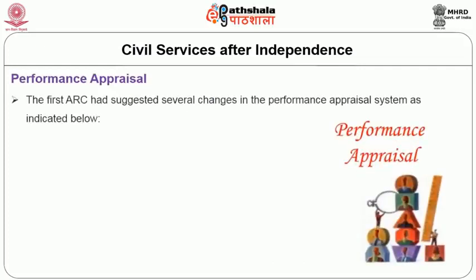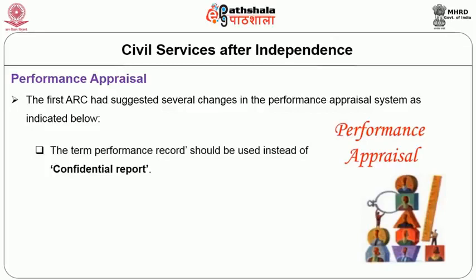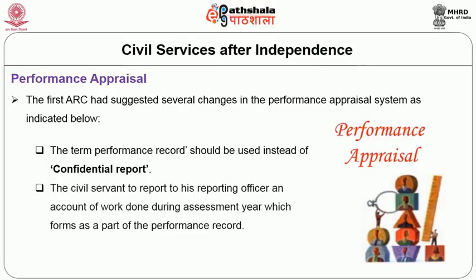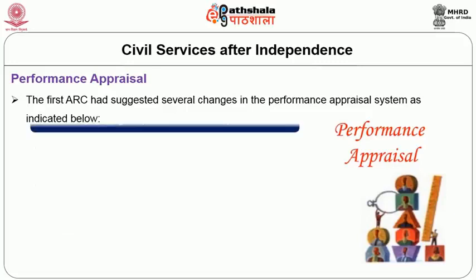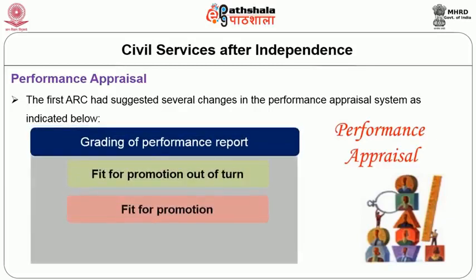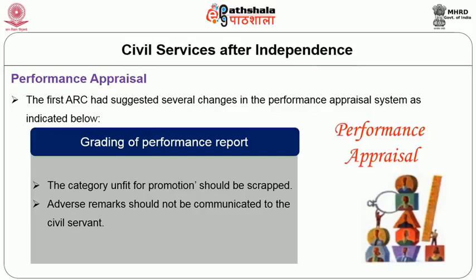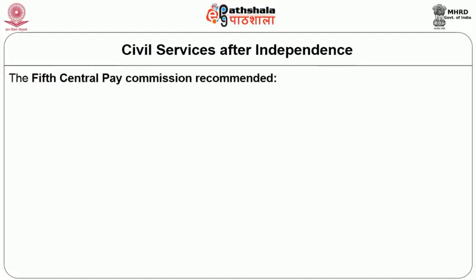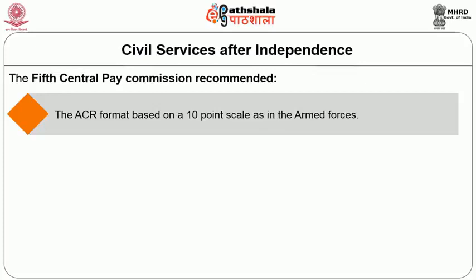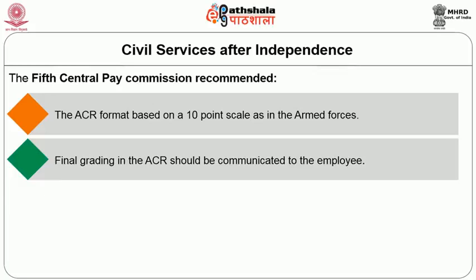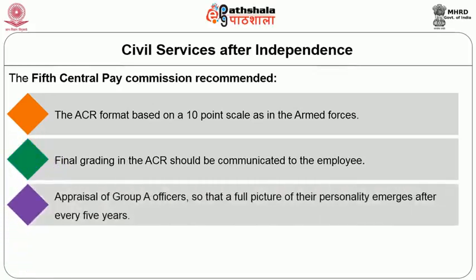The First ARC suggested several changes in performance appraisal: the term 'performance record' should replace 'confidential report'; civil servants should report to their reporting officer an account of work during the assessment year; grading of performance should be done in three categories — fit for promotion out of turn, fit for promotion, and not fit for promotion — with the 'unfit for promotion' category to be scrapped. Adverse remarks should be communicated to the civil servant. The 5th Central Pay Commission recommended an ACR format based on a 10-point scale as in the Armed Forces, with the final grading communicated to the employee, and an appraisal of Group A officers every five years.